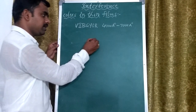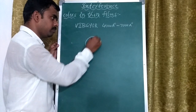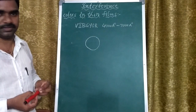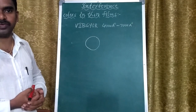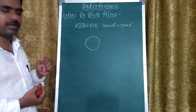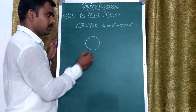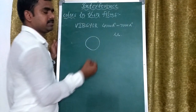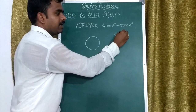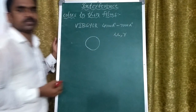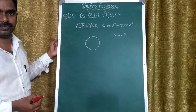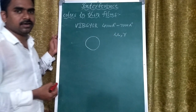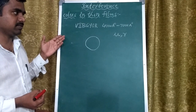If we take a soap bubble, its surface is curved. For the soap bubble, the refractive index μ is not constant, and the angle of refraction r is also not constant.